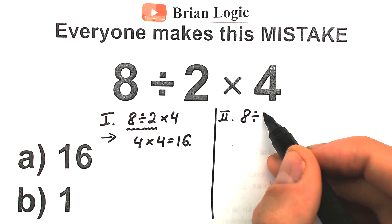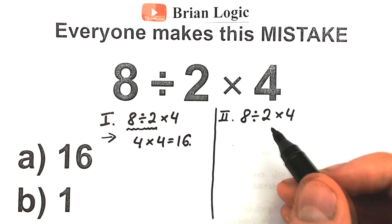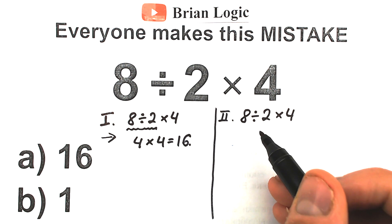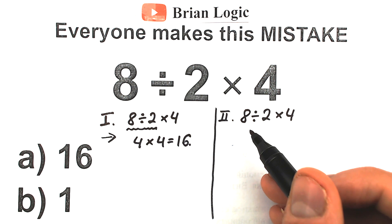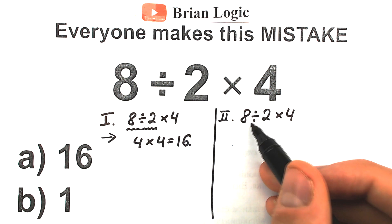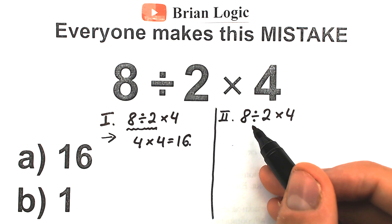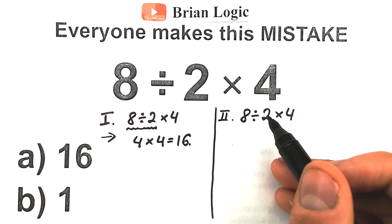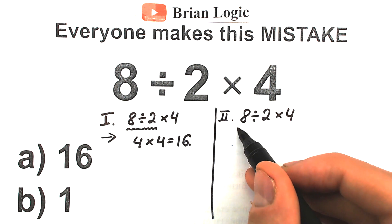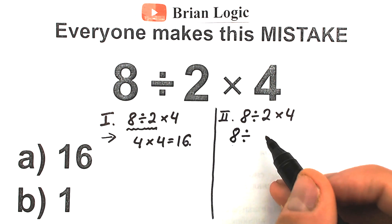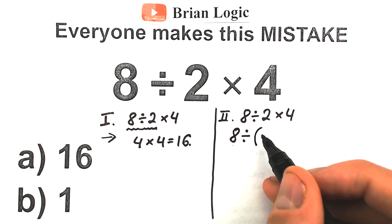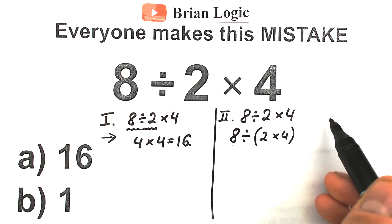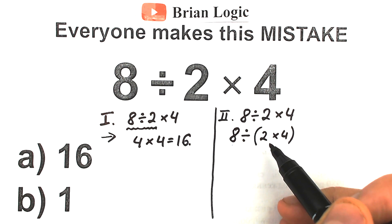Let's look closely at the second interpretation. We have 8 divided by 2 and times 4. Let's suppose it was maybe 1917 or 1920 — 100 years ago — and you saw this expression in your textbook. What would you think the author was trying to write? Historically, the division symbol was used to mean you should divide by the entire product on the right of the symbol — the whole entire product on the right. So the division symbol 100 years ago meant you divide by the whole entire expression. I put this expression inside parentheses: so we have 2 times 4.